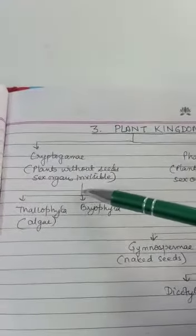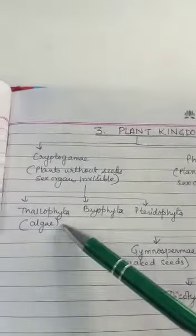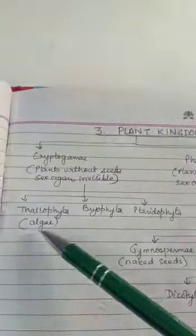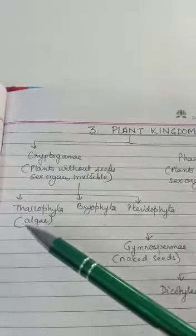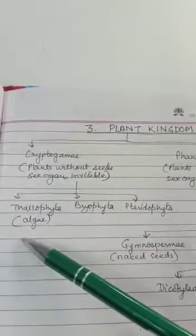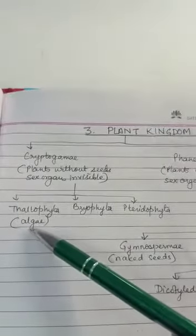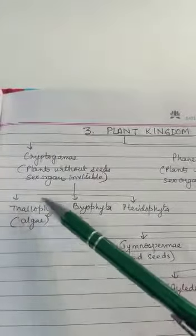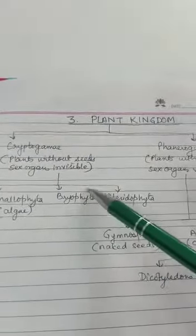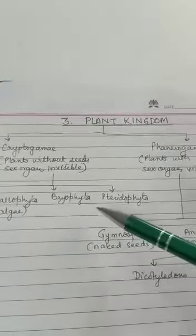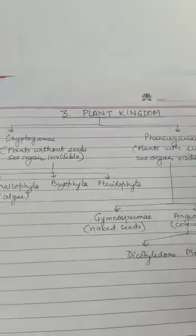In Cryptogamae, sex organs are invisible and seeds are absent. It is further divided into: Thallophyta — which has a thalloid body, meaning the body is not divisible into root, shoot and stem — almost all algae are included here. Bryophyta is more advanced, including plants like Marchantia. Pteridophyta includes ferns. We will study all these classifications in detail. Thank you children.